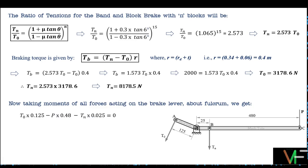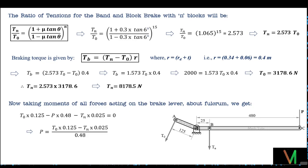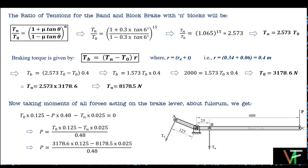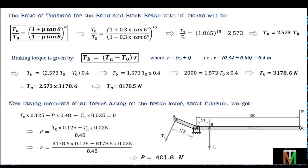Taking moments about the fulcrum: T0 × 0.125 − P × 0.48 − Tn × 0.025 = 0. Rearranging: P = (T0 × 0.125 − Tn × 0.025) / 0.48. Substituting T0 = 3178.6 N and Tn = 8178.5 N: P = (3178.6 × 0.125 − 8178.5 × 0.025) / 0.48 = 401.8 N. So the least force to be applied on the lever is 401.8 N.